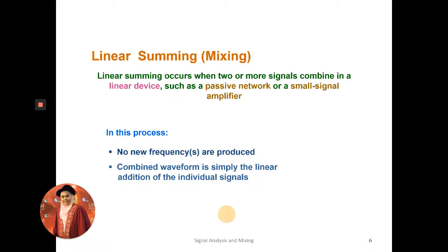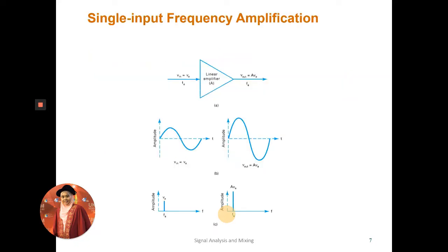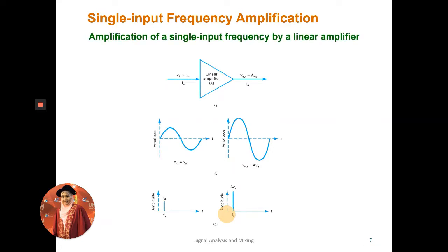The combined waveform in linear mixing is simply the linear addition of individual signals in terms of amplitude, not frequency. For single-input frequency amplification using a linear amplifier with gain A, the output amplitude is the gain multiplied by the input amplitude, but the frequency remains the same as the input frequency.